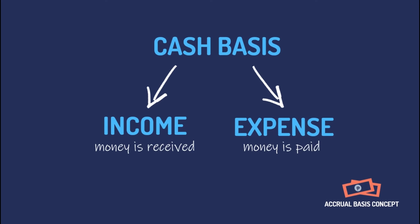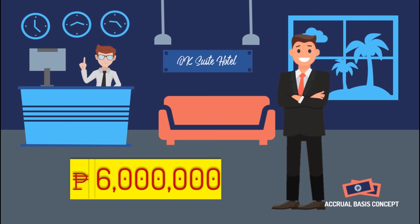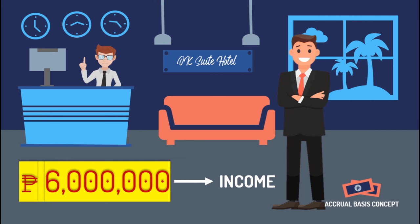To better understand this, let's meet Mr. Joshua Smith Candela, a big-time customer of OK Sweet Hotel, who stayed in Wakanda for two months to study the place's cutting-edge technology. He promised to pay his hotel rent amounting to $6 million before he went back to the US. The $6 million can now be recorded by OK Sweet Hotel as an income, even though they haven't collected anything yet. On the other hand, Mr. Candela also has to recognize an expense, even if he has not paid OK Sweet Hotel yet, because he already availed the company's services.